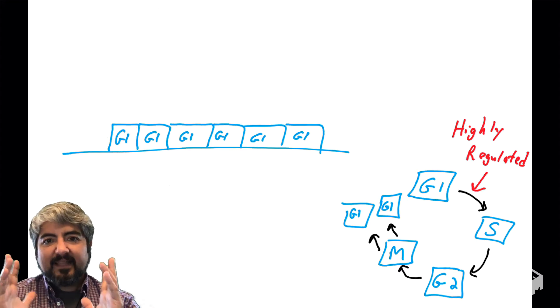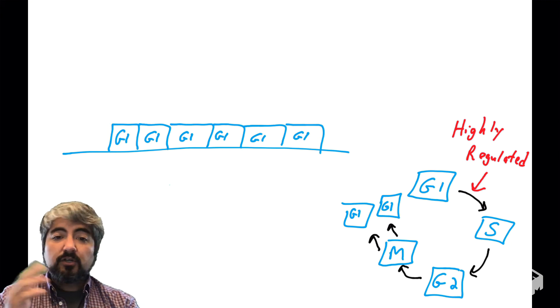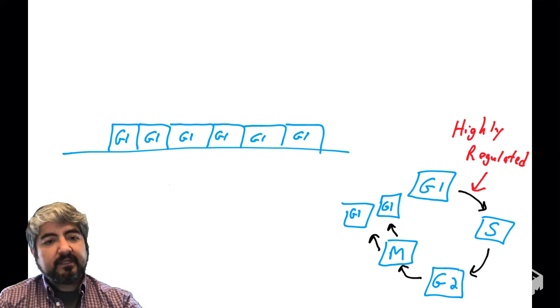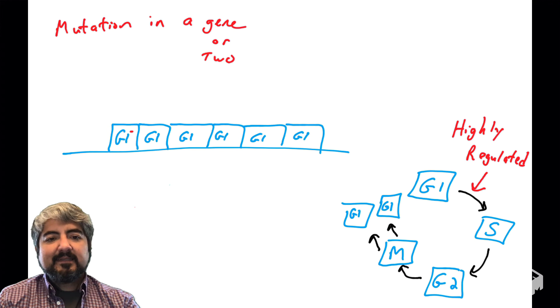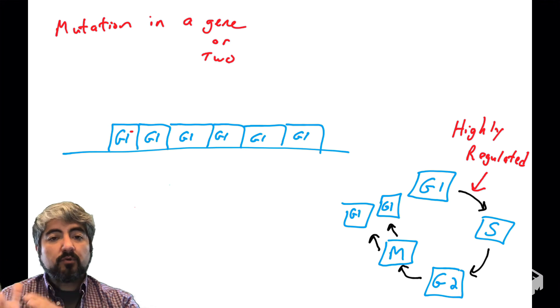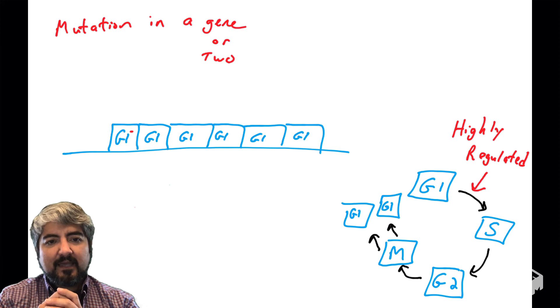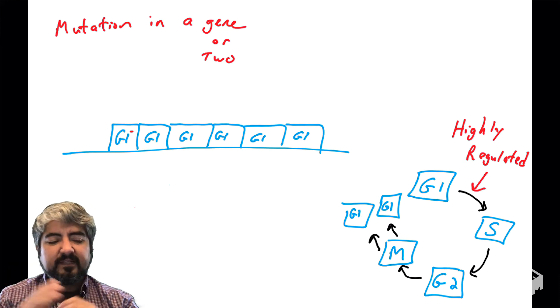So keep those classes of genes in mind as we talk about and learn all sorts of different genes and proteins. So let's say mutations occur in one or two of these genes that we just talked about, either pro-growth genes or anti-growth genes. And the mutation occurs in that little cell with a red dot, and it mutates in one or two of these important cell regulatory genes.